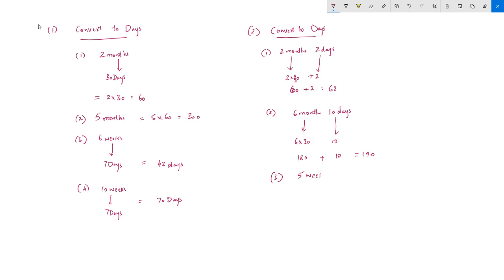For 5 weeks 4 days: 5 × 7 = 35 days, plus 4 days, that will be 39 days.